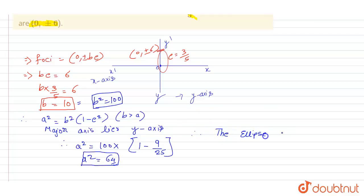Therefore, the ellipse equation is x²/64 + y²/100 = 1. This is the ellipse equation.